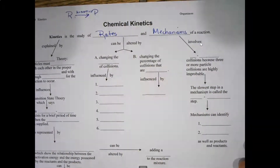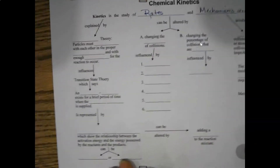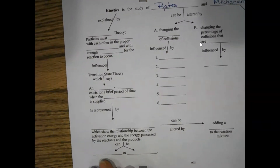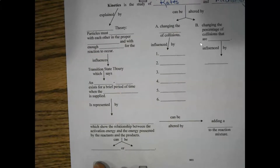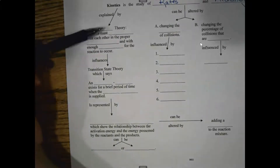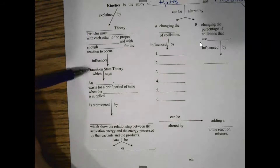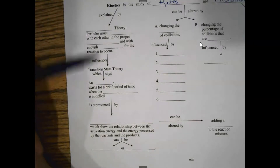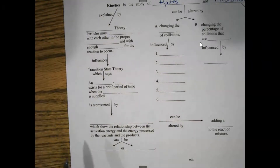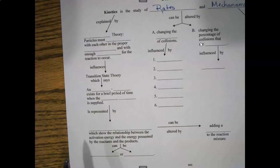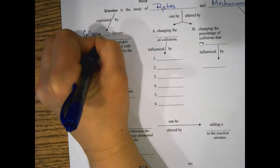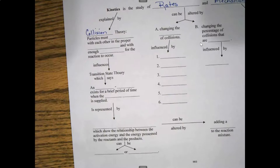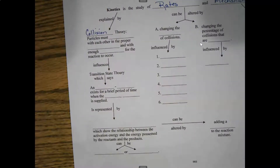We're going to hit on both of those in this unit. We're going to do some general stuff first. We've got a theory I haven't named yet, and we've got something called the transition state theory. Kinetics can be explained by something called the collision theory, and there are three requirements to getting a reaction to take place appropriately.